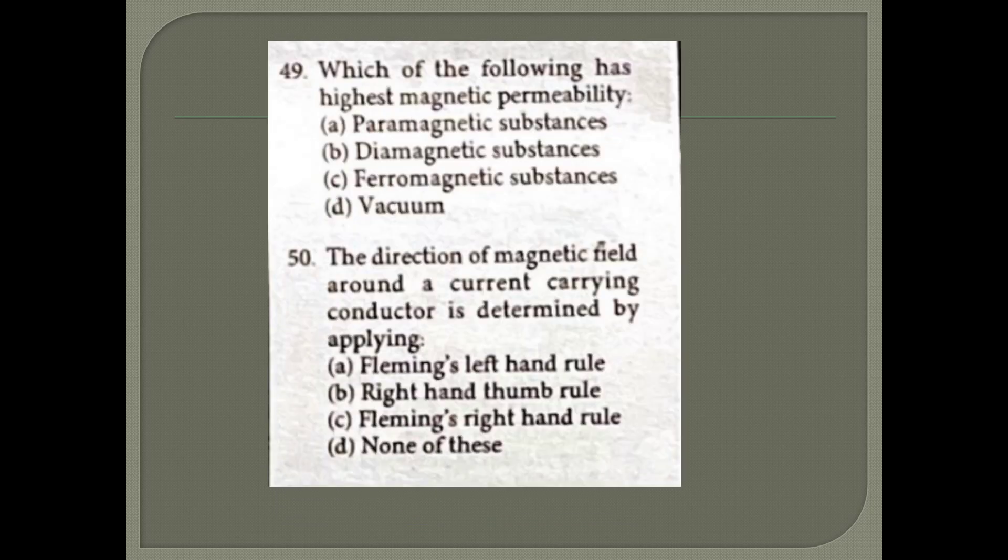Which of the following has highest magnetic permeability? Magnetic, diamagnetic, ferromagnetic, or vacuum. It is option C - ferromagnetic substance. Last question: The direction of magnetic field around a current carrying conductor is determined by applying Fleming's left hand rule, right hand thumb rule, Fleming's right hand rule, or none of these.